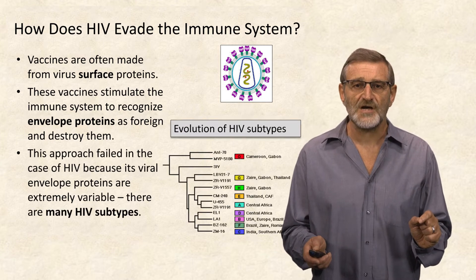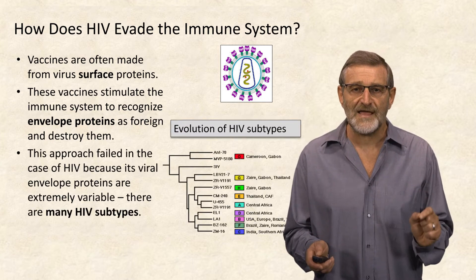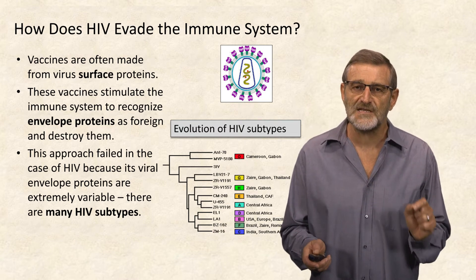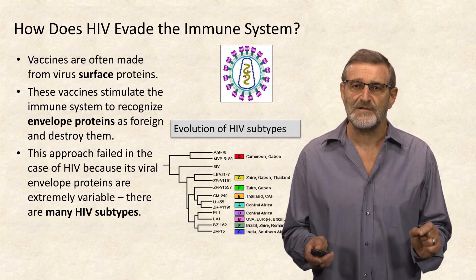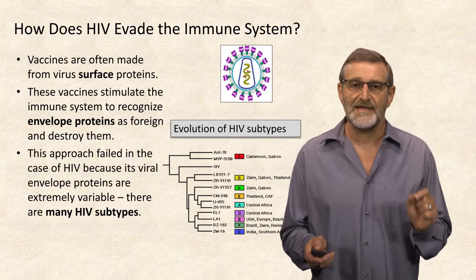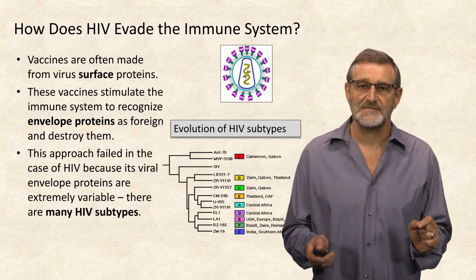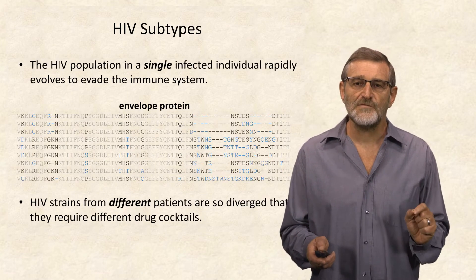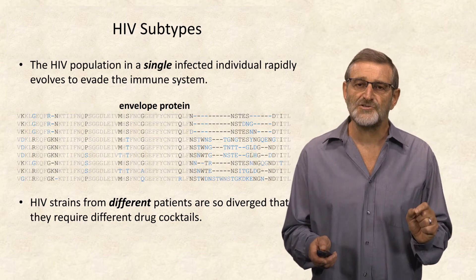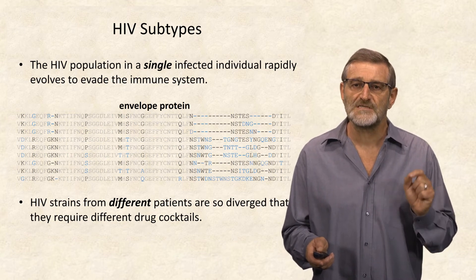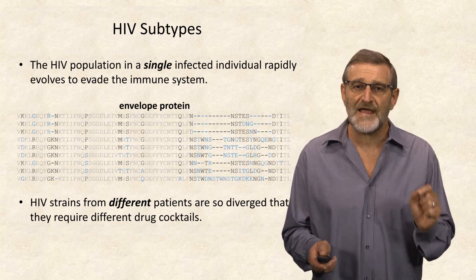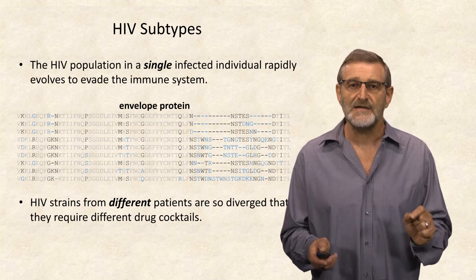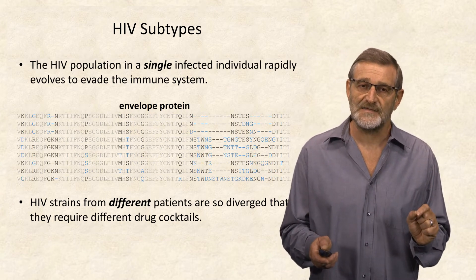This approach, however, failed because the HIV envelope proteins are extremely variable. There are many HIV subtypes, and even in a single individual, the HIV population evolves so fast that it evades the immune system and results in many HIV subtypes.